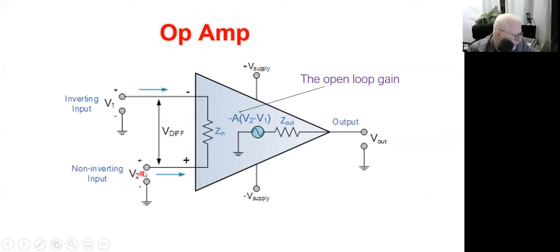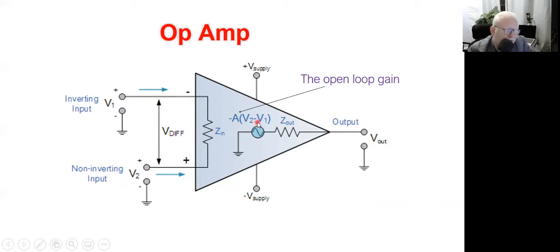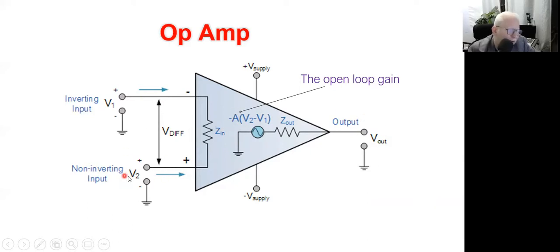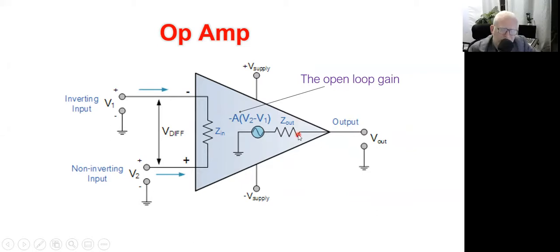For example, if you connect V1 to ground and V2 to 5 volts, then V2 minus V1 = 5, and multiplied by a gain of 10 gives 50 volts at the output — so you amplify 5 volts to get 50 volts. This is a trivial example, and practically impossible, but it illustrates the relationship between Vout and the inputs V2 and V1.